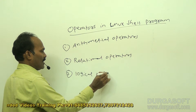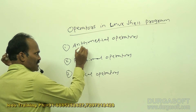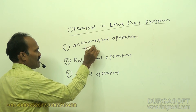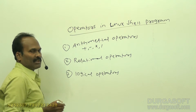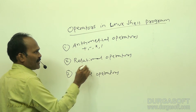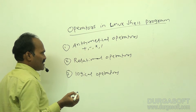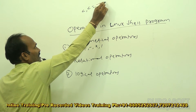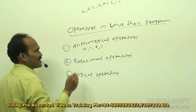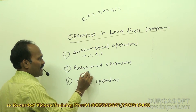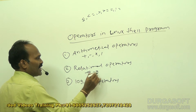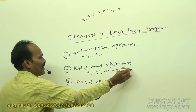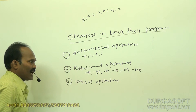Arithmetical operators, as their name says, are used for calculating mathematical operations like addition, subtraction, multiplication, and division. For relational operators, in C/C++ and Java we use symbols like less than, less than or equal to, greater than or equal to, equal to, and not equal to. But in Linux shell programming we use symbols like -gt for greater than, -ge for greater than or equal to, -lt for less than, -le for less than or equal to, -eq for equal to, and -ne for not equal to.